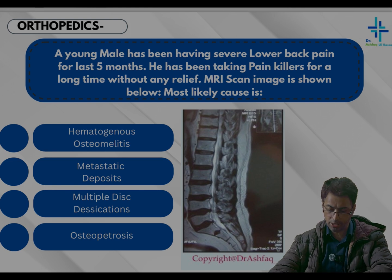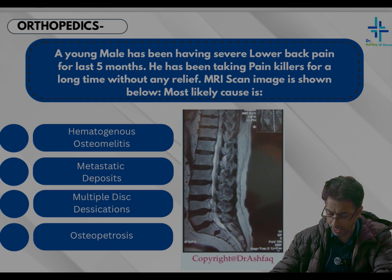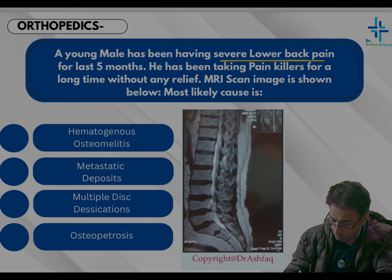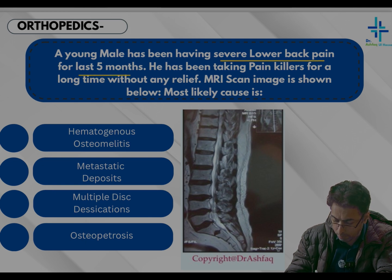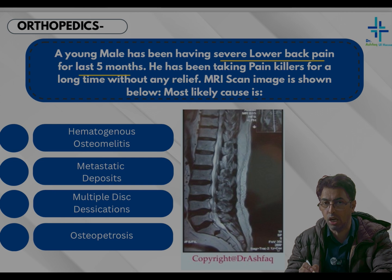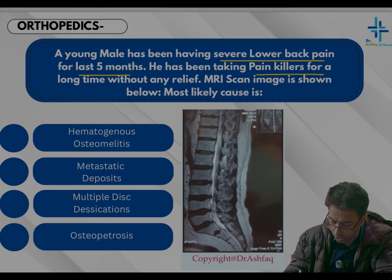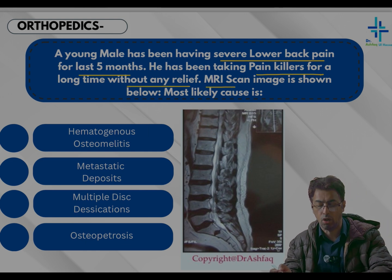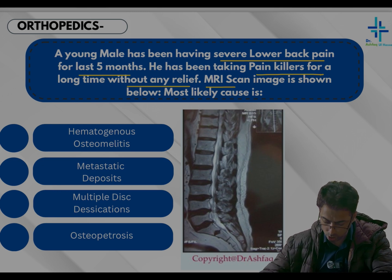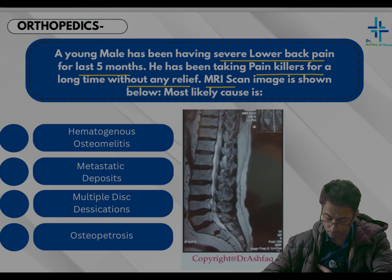A question from orthopedics: a young male has been having severe low back pain for the last five months — it is chronic, not acute. He has been taking painkillers for a long period without any relief, which is very important. An MRI scan is shown and we are asked the most likely cause. The options given are hematogenous osteomyelitis, metastatic deposits, multiple disc desiccations, and osteopetrosis.